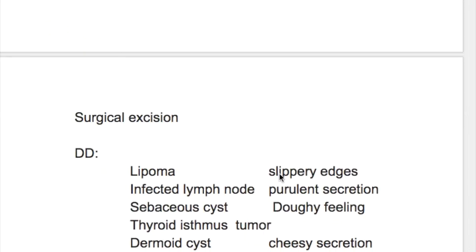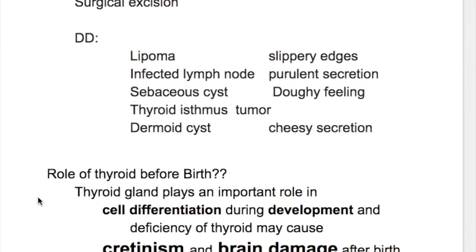A lipoma has slippery edges. An infected lymph node has purulent secretion. A sebaceous cyst has a doughy feeling and a dermoid cyst has cheesy secretion.